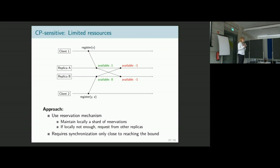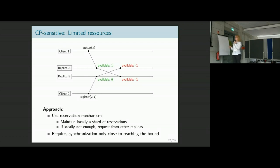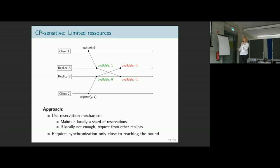In Antidote we have a fallback: we've implemented some form of reservation systems using bounded counters that shard the reservations on the different replicas. You can only perform an operation if you locally have enough resources left on that replica. If there aren't enough, you have to request them from other replicas, and these operations can fail — whereas CRDT updates typically are not allowed to fail. The nice thing is this only requires synchronization if you're close to reaching the bound, so in many cases you get your fast latency, and only when you're in danger of violating something do you need to coordinate.